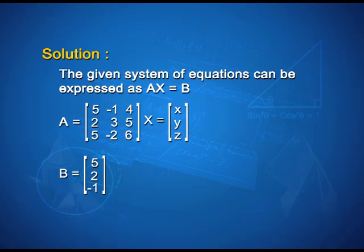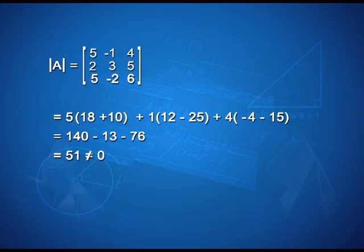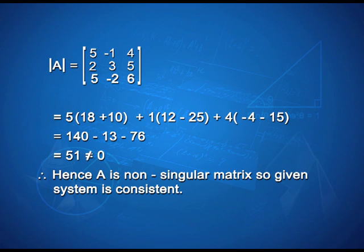Now, det(A) = |5, -1, 4; 2, 3, 5; 5, -2, 6|. On solving this determinant, we have 5(18+10) + 1(12-25) + 4(-4-15), which simplifies to 140 - 13 - 76 = 51, which is not equal to 0. Hence A is a non-singular matrix, so the given system is consistent.